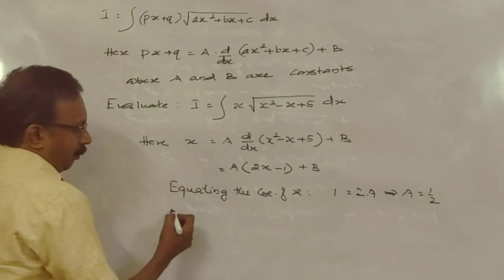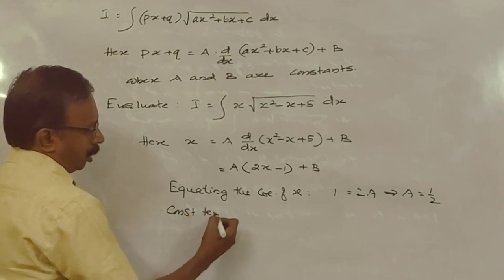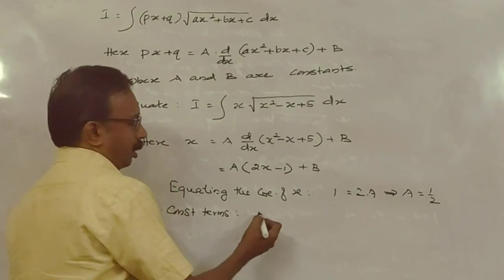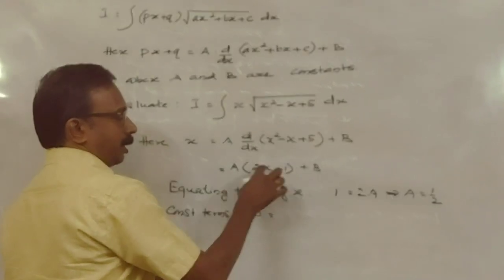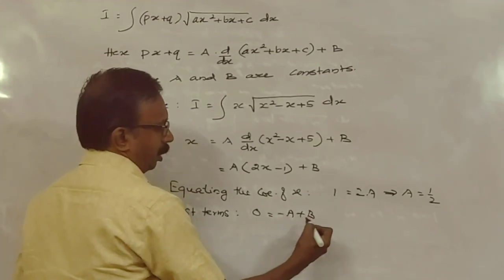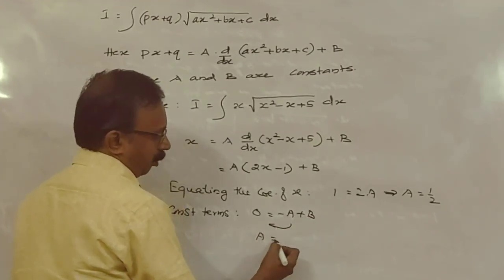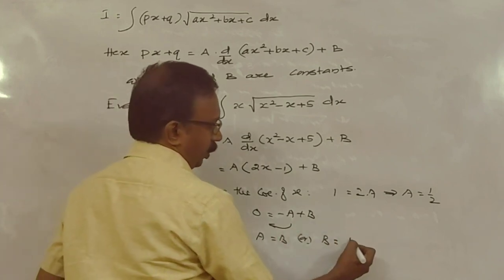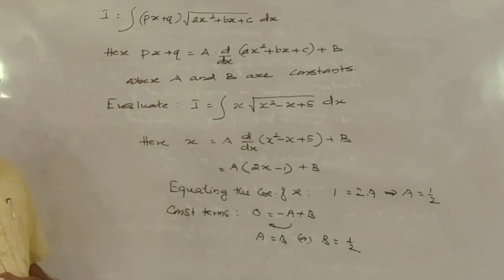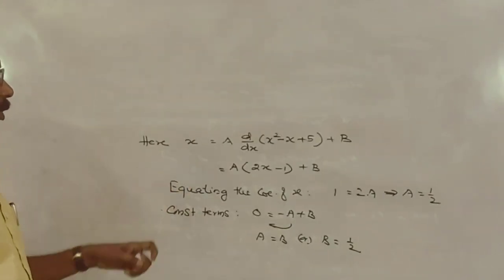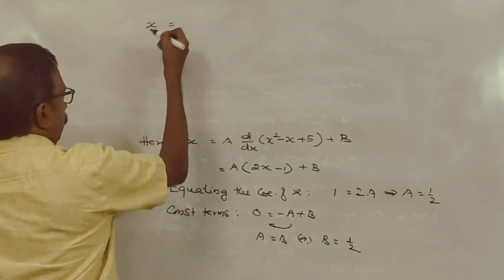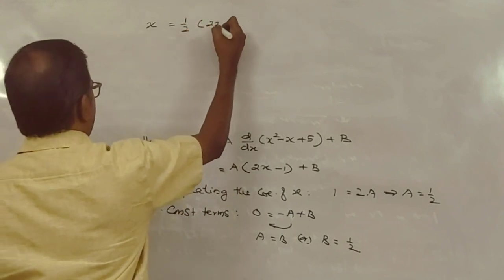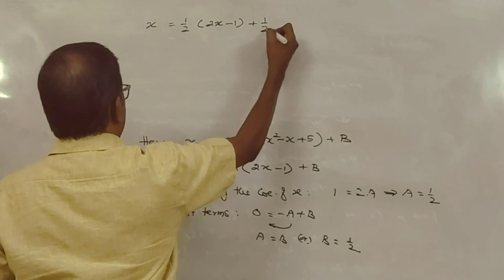Now taking the constant term: on the left side there is no constant, so it is 0. On the right side the constant is -A + B. From this we get B = A = 1/2. Therefore x = (1/2)(2x - 1) + 1/2.